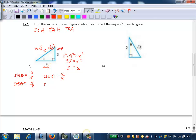The reciprocal of cosine is secant. So secant of theta is the reciprocal of 4 fifths, which is 5 fourths.